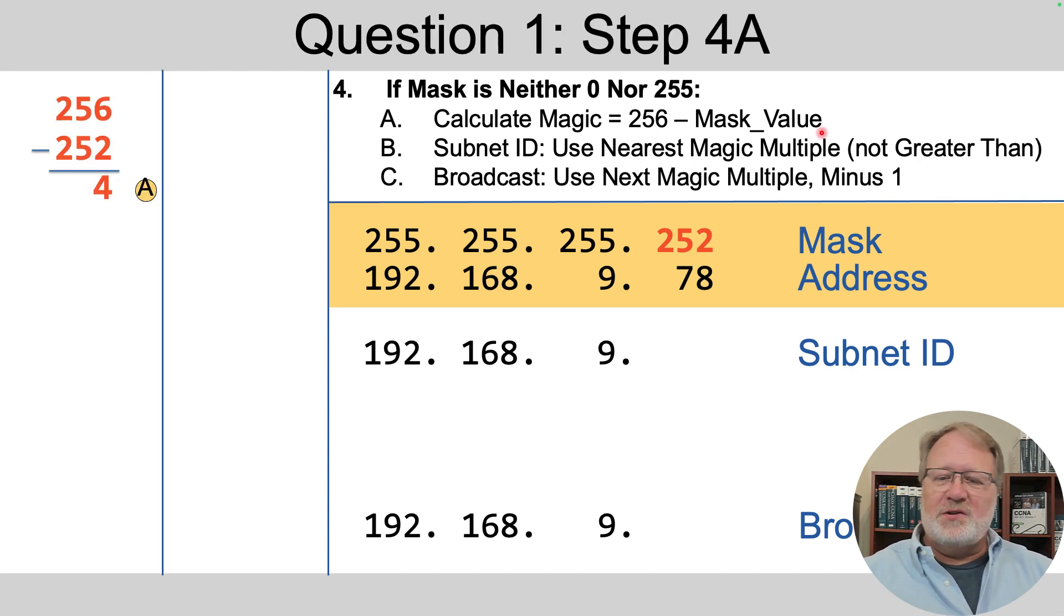So how does that go? Well, that's 256 minus 252. Why 256? We always start with 256 for this calculation, and we pick the mask's value in that interesting octet, 252 in this case, which of course gives us four.